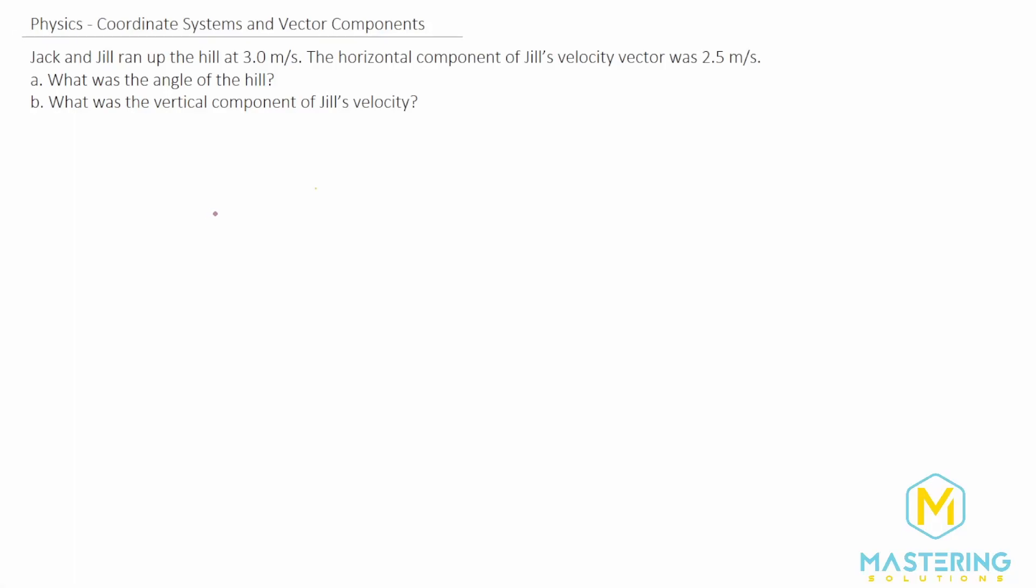Welcome to Mastering Solutions. In this vector problem, they tell us that Jack and Jill ran up the hill at 3 meters per second. The horizontal component of Jill's velocity vector was 2.5 meters per second. For part A, we need to find what the angle of the hill was. And for part B, we need to find the vertical component of Jill's velocity.